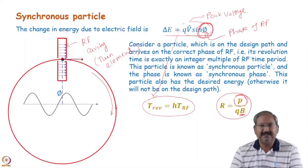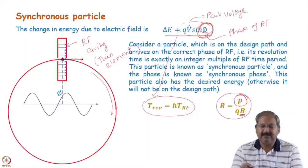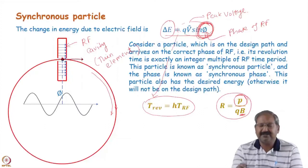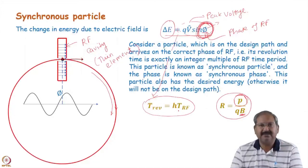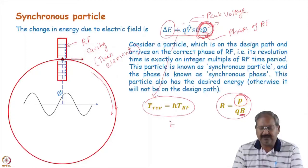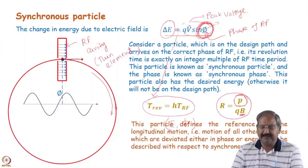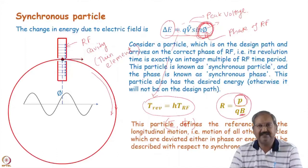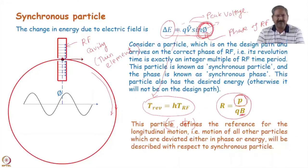This particle is known as the synchronous particle, characterized by two variables: how much energy it is receiving and what phase it arrives at in the RF cavity. This is called the synchronous phase, and the energy which exactly follows the design orbit in the synchrotron is the correct energy. In longitudinal dynamics, the synchronous particle's energy and phase make the reference - any particle deviating in phase or energy is studied with respect to this synchronous one.